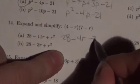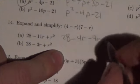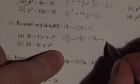Negative r times 7, negative 7r, and then negative r times negative r is going to be positive r squared.